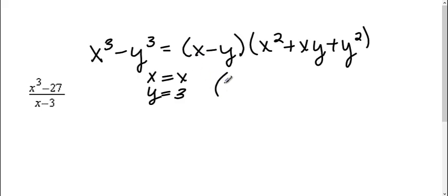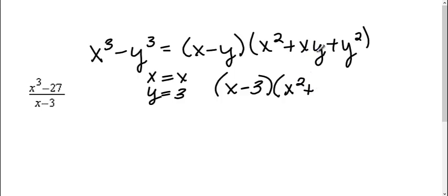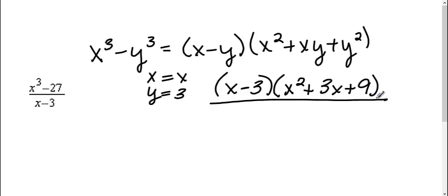So substituting in: x minus y becomes x minus 3, times x squared plus x times y — which is 3 times x — plus y squared. My y is 3, so 3 squared is 9. So that's what I get at the top when I simplify the numerator.